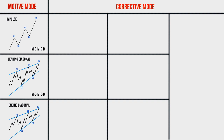The third type of wave formed in the motive mode is the ending diagonal. All the waves of the ending diagonal are formed in the corrective mode, in contrast to the leading diagonal. The first, third, and fifth waves of the ending diagonal are zigzags. The ending diagonal can appear only at the place of wave five of the impulse or wave C of the zigzag, and very rarely at the place of wave C of the flat. That is, the ending diagonal is the final wave pattern — it indicates that the previous trend is nearing completion and soon we will see a correction or a new trend in the opposite direction.